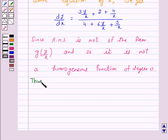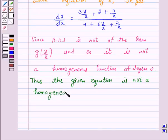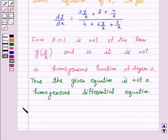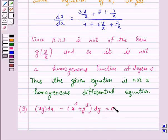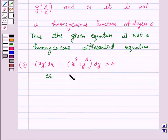Thus the equation in part A is not a homogeneous differential equation. Moving to part B, the given differential equation is xy dx minus x cubed plus y cubed into dy is equal to 0, or dy/dx is equal to x cubed plus y cubed over xy.